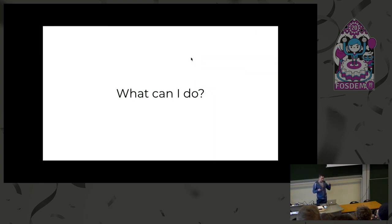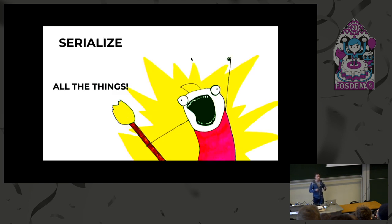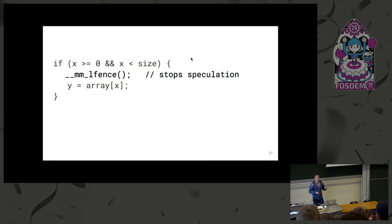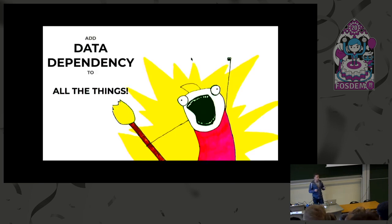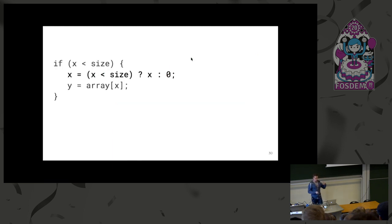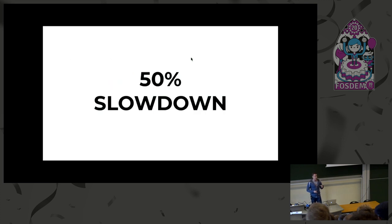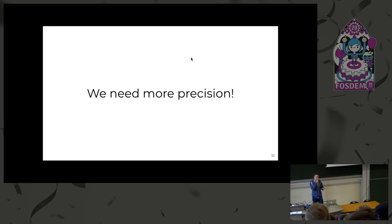So what can we do about it? One of the first proposed solutions was to add serialization points everywhere. There are serializing instructions in x86 CPUs — for example, Intel has LFENCE — and the suggestion was to put LFENCE after every conditional branch. This does fix the problem and prevent Spectre. However, there is one big issue: it's very slow. On our benchmarks, programs became around five times slower. A better, more sophisticated approach is to add data dependencies between the conditional branch and the memory access. It's somewhat better — it doesn't completely stop speculative execution but only delays vulnerable memory accesses. But it's still around 50% overhead. So we need more precision — patch only those parts actually vulnerable to Spectre.